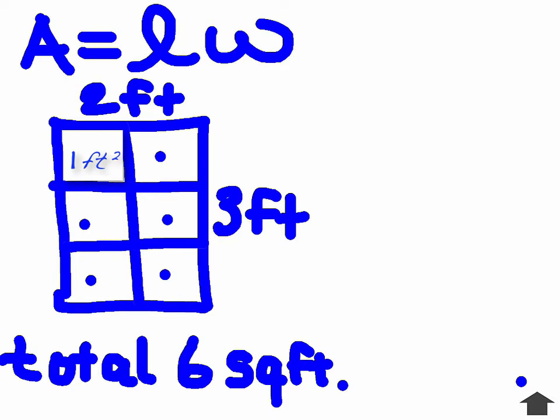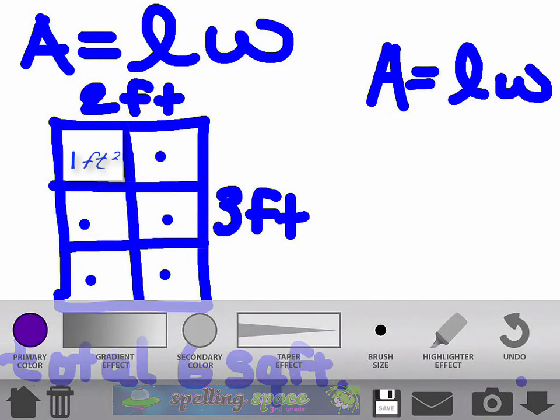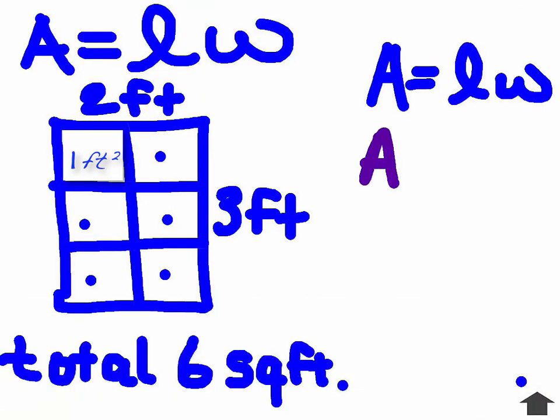So for example, area equals length times width. Since I know my sandbox dimensions are two feet by three feet, I can substitute in those values into my formula. So area equals two feet times three feet.